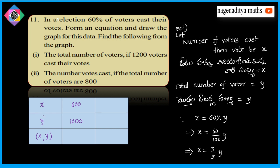Next, y value 2000. So x comes out as 1200. So the points we have are (600, 1000) and (1200, 2000).